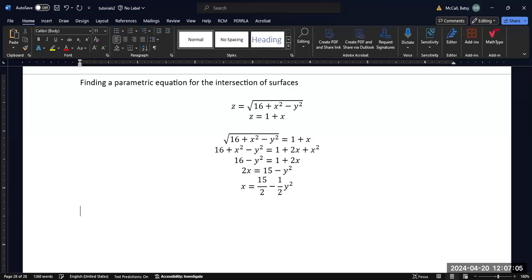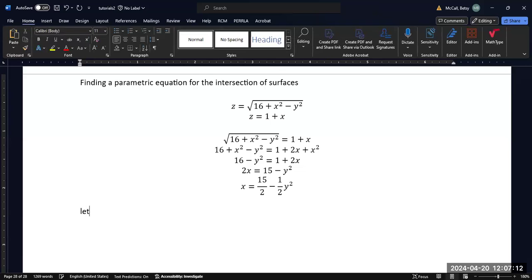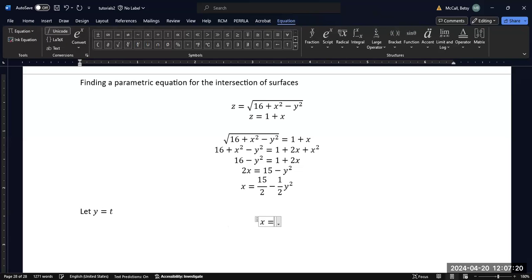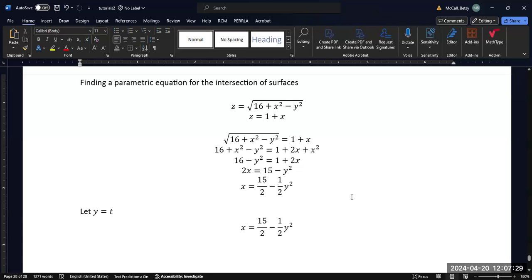Now, once I have a single variable in terms of the other variable, I can say let y equal t. And so then, once I do that, I can let x equal 15 over 2 minus 1 half t squared.